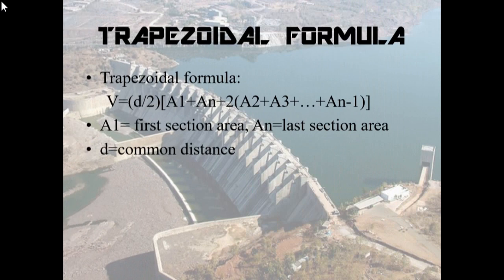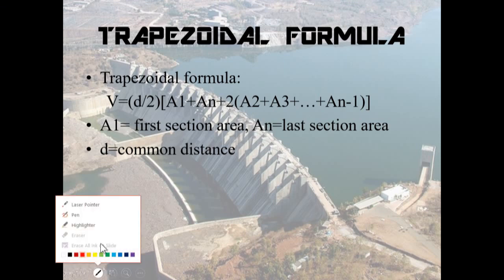On this slide, we are looking at one of the formulas used to find the volume of a reservoir — the Trapezoidal formula. The formula is given on the screen and the terminology used: A1 is the first section area, AN is the last section area, and D is the common distance. Let me explain in detail.